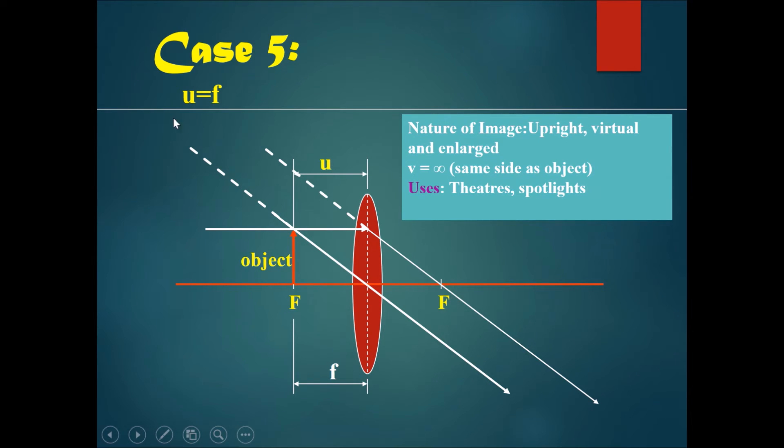This image will also be enlarged, much bigger than the object. So over here, you can see that the image distance is infinity, and it will be on the same side as the object.